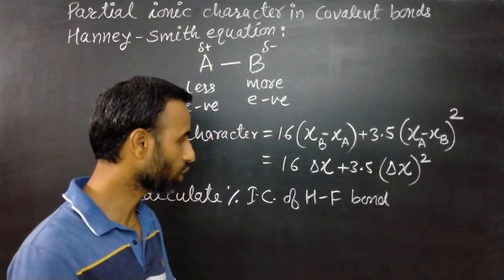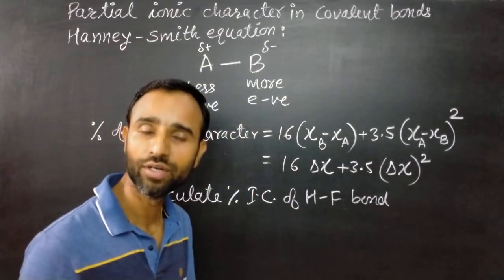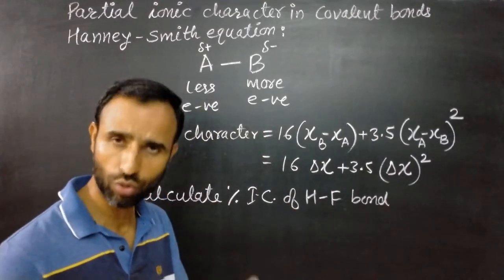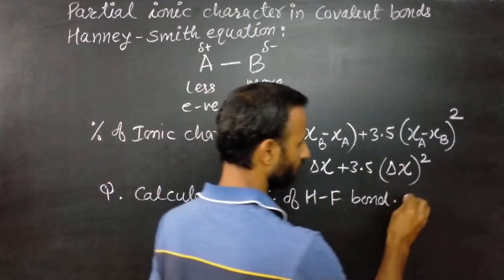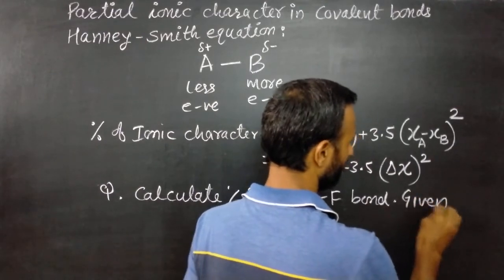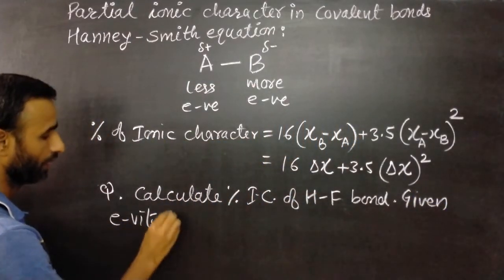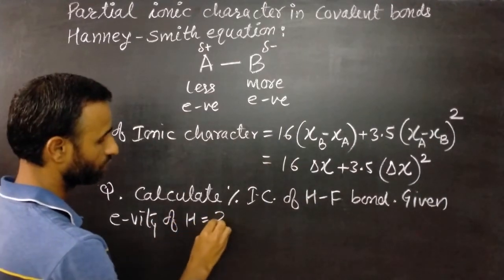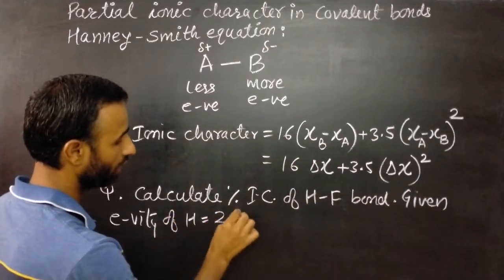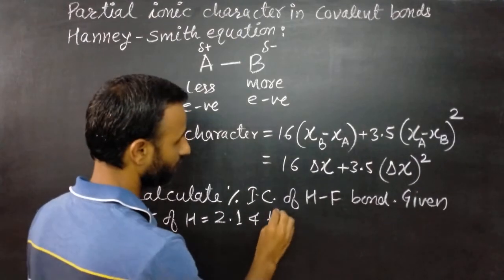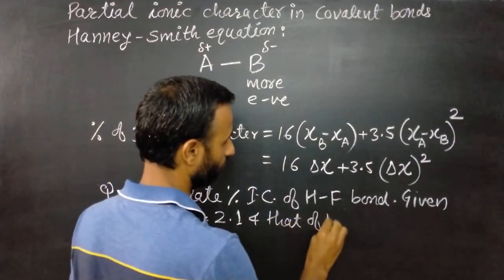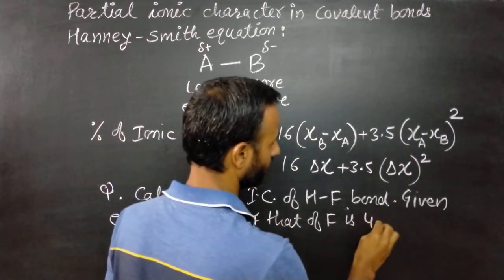To calculate percentage of ionic character, what do we need? We need their electronegativity. That should be given to us. So, given electronegativity of H is 2.1 and that of fluorine is 4.0.